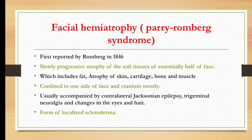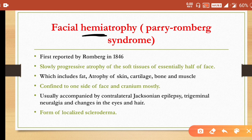Facial hemi atrophy, famously known as Parry-Romberg syndrome, was first reported by Romberg. Parry is also the name of one of the clinicians. It is a slowly progressive atrophy of the soft tissues of the essential half of the face, which includes fat, atrophy of the skin, cartilage, bone, and muscles. It is confined to one side of the face and cranium, and is usually accompanied by contralateral Jacksonian epilepsy, trigeminal neuralgia, and changes in the eyes and hair.